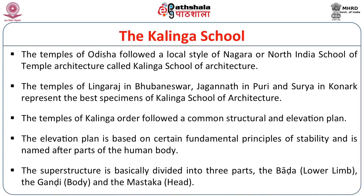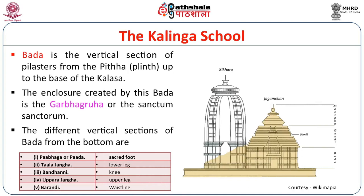The superstructure of a Kalinga temple is basically divided into three parts: the Bada, the Gandhi, and the Mastaka — that is the lower limb, the body, and the head. All the temples in this school of architecture have taken their names from parts of the human body, so you have the lower, middle, and upper torso.